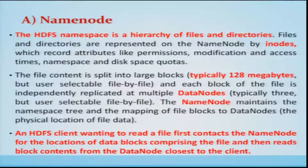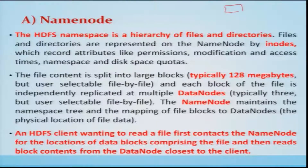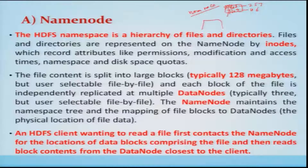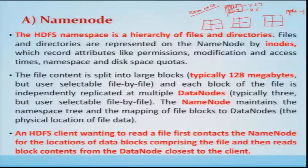The NameNode in HDFS maintains a hierarchy of files and directories. Files and directories are represented on the NameNode by inodes. File content is split into large blocks of 128 MB, and each block of a file is independently replicated at many DataNodes. The NameNode maintains the namespace tree and the mapping of file blocks to DataNodes. For example, file 1 may have data blocks 2, 5, and 7, and file 2 may have data blocks 4 and 6. By default, each block is replicated three times.